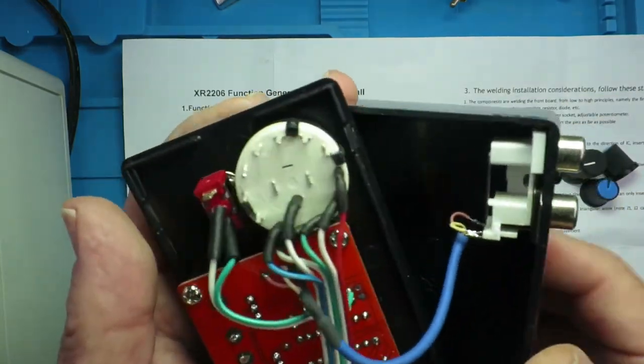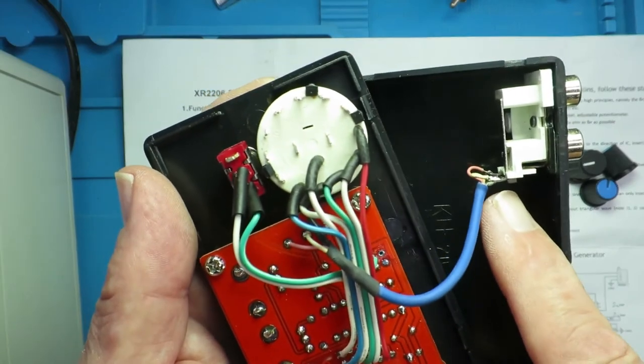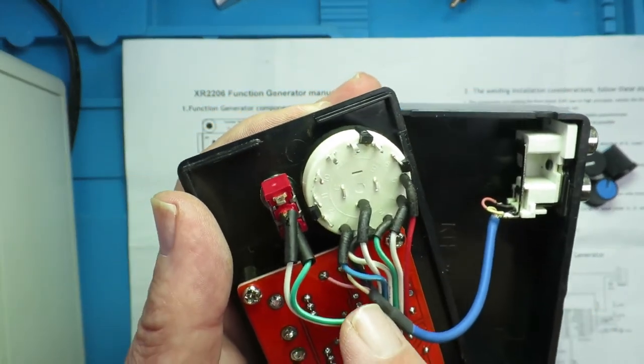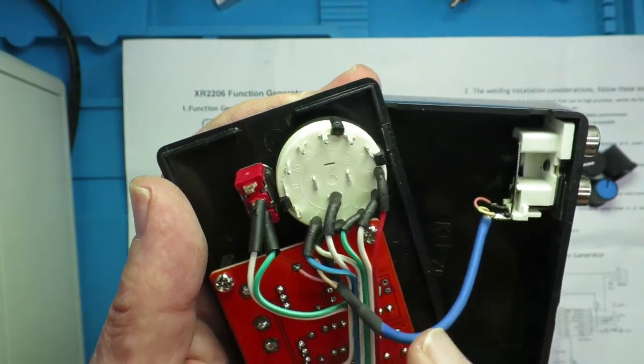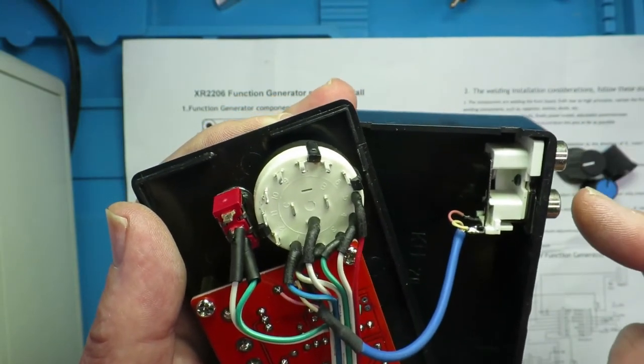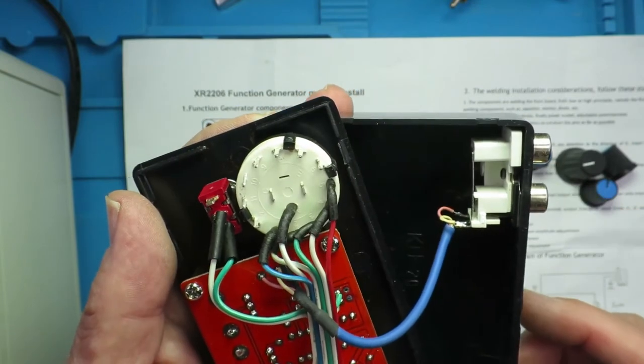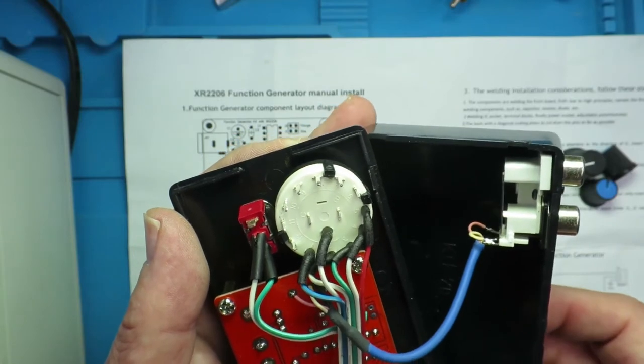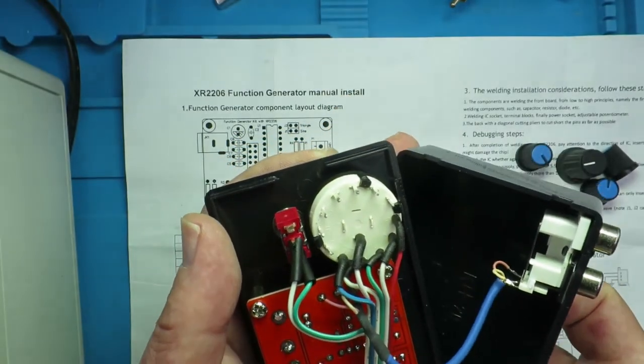And finally, the connections for the phonos sockets. So the square wave output in the middle there is going to the white phono. And the triangle or sine wave is going to the red phono. So now the moment of truth. Let's get this thing connected to the power supply and see how it works.